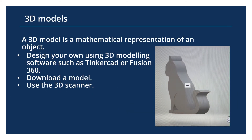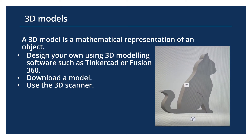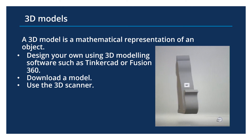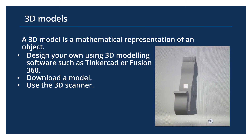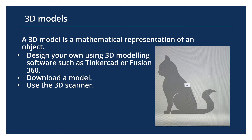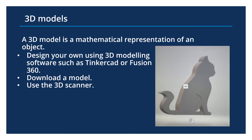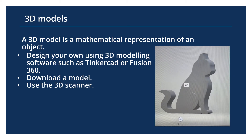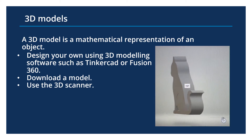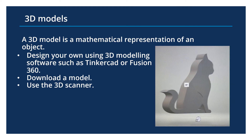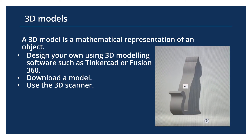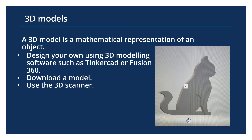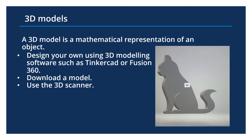Before you can 3D print something, you're going to need a 3D model of it. 3D models are a mathematical representation of an object. There are a few ways you can get a 3D model: you can design your own using 3D modeling software such as Tinkercad, Fusion 360, or Blender. There are many workshops with the Maker Studio to learn how to use 3D modeling software. You can also download a model from online, as many people design and sell them or give them away for free. You could also use a 3D scanner, which creates a point map of an object using lasers and cameras, and from that information creates a 3D model.